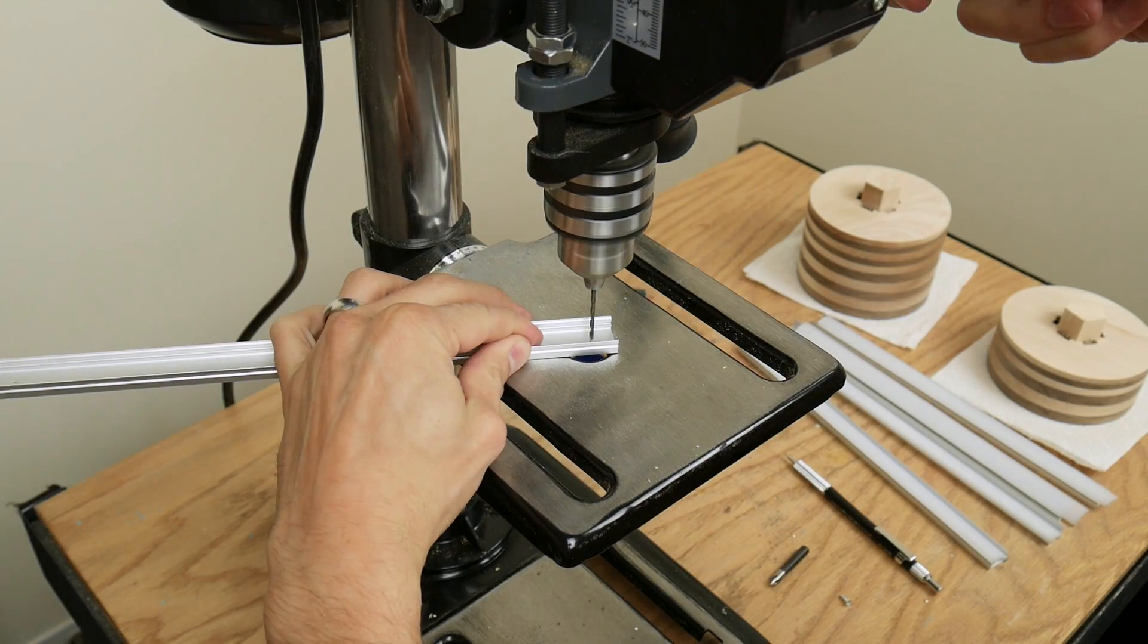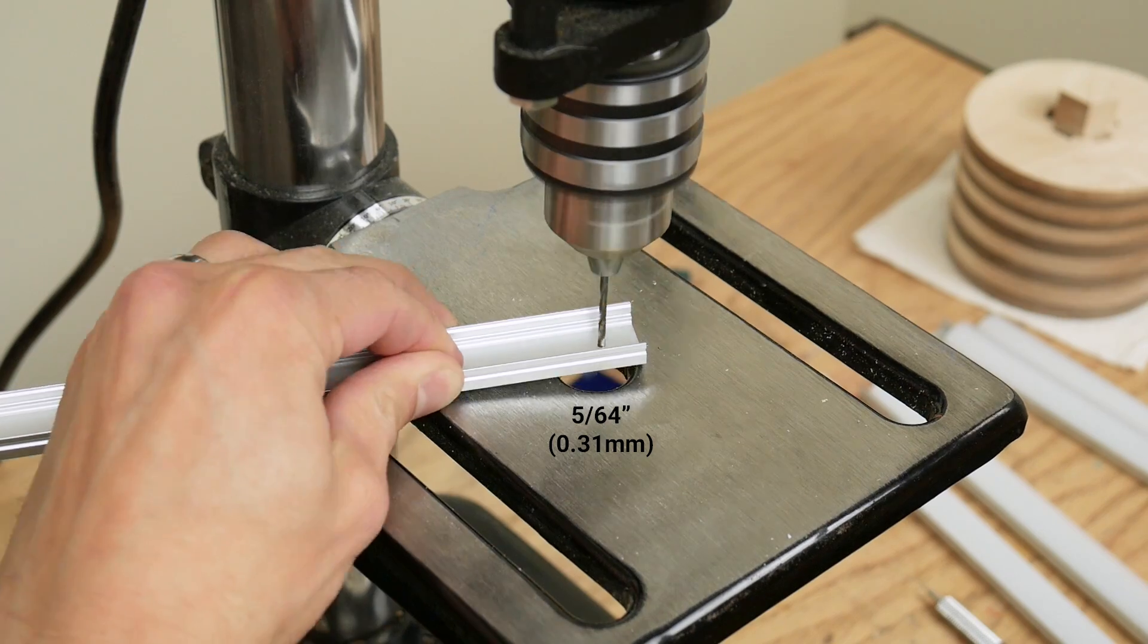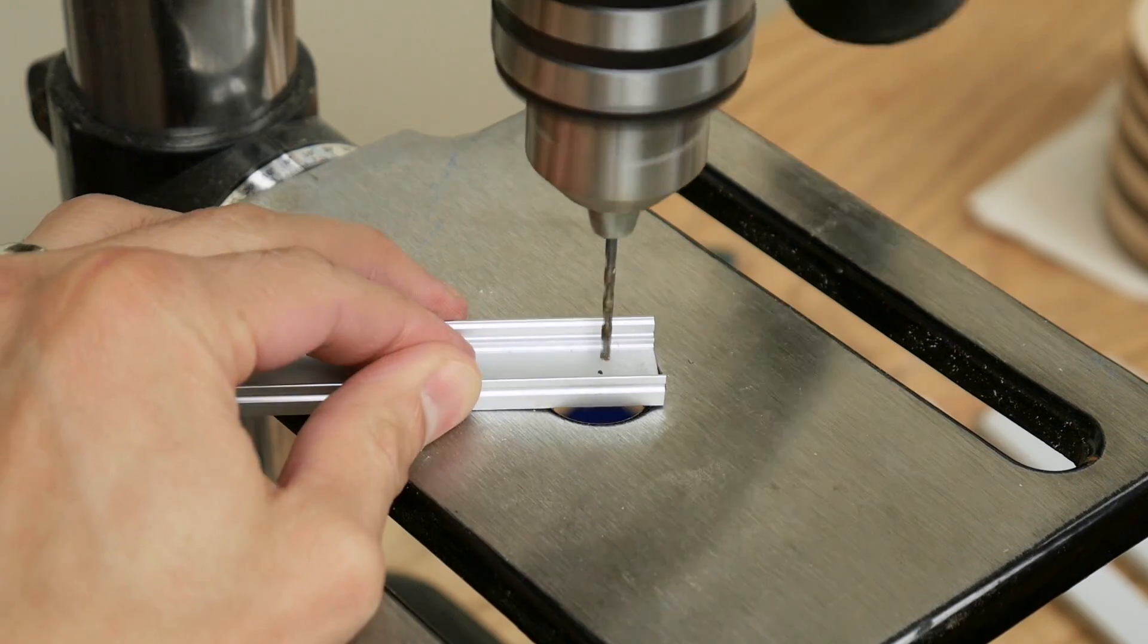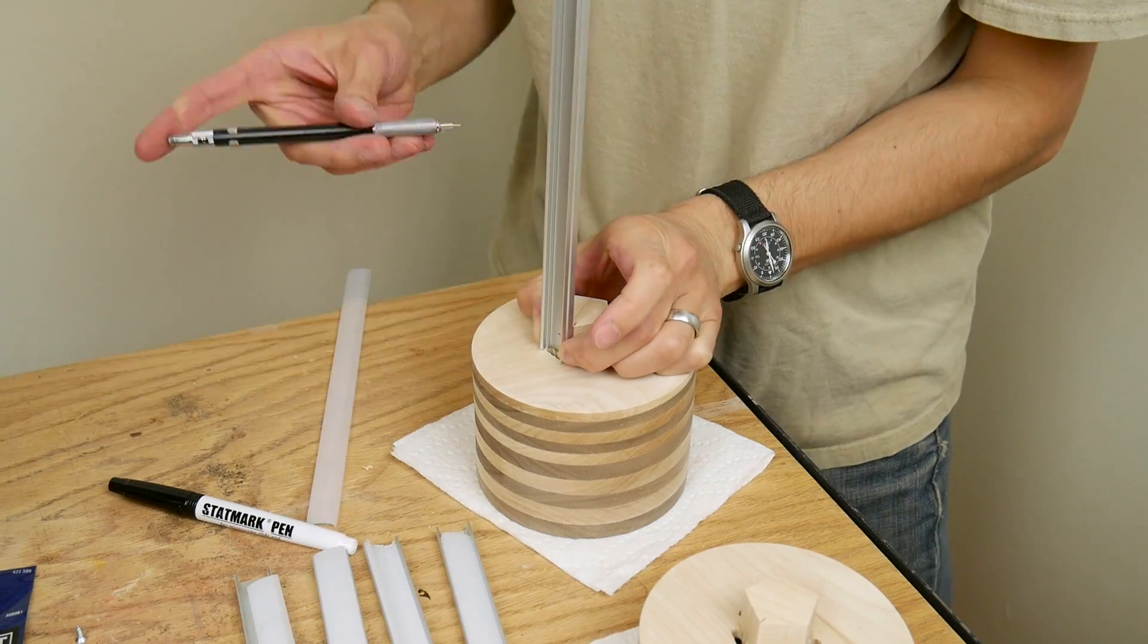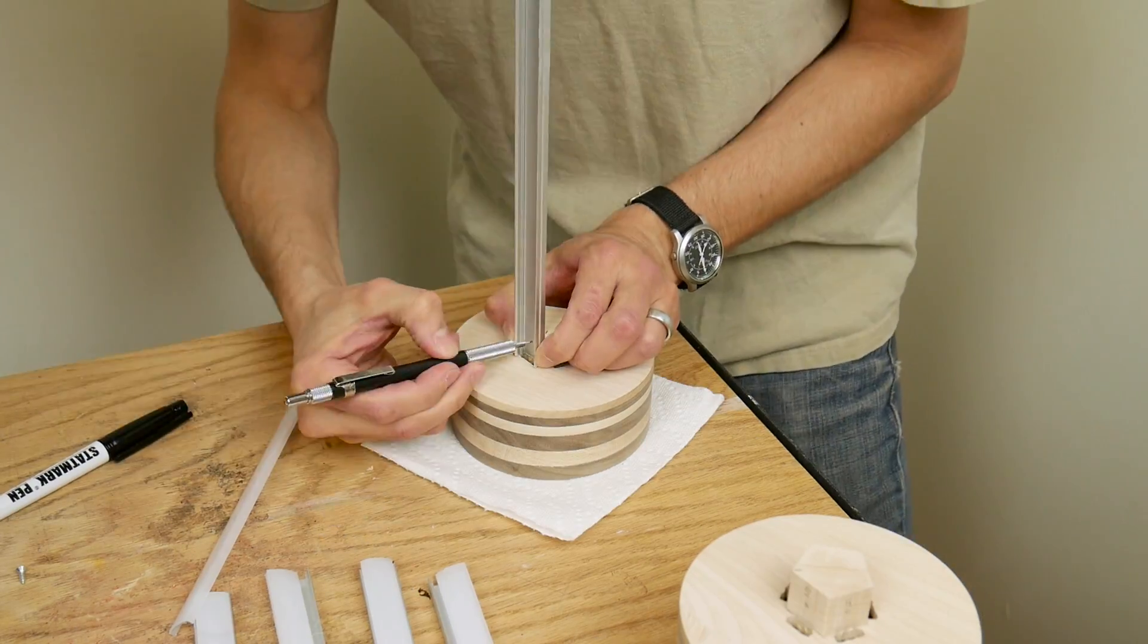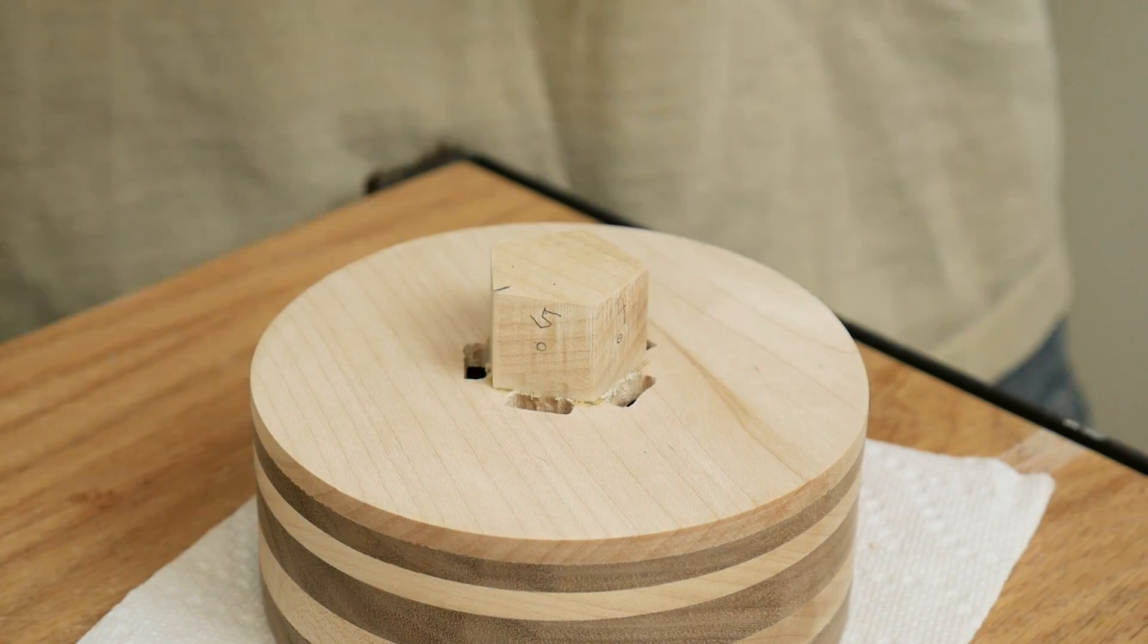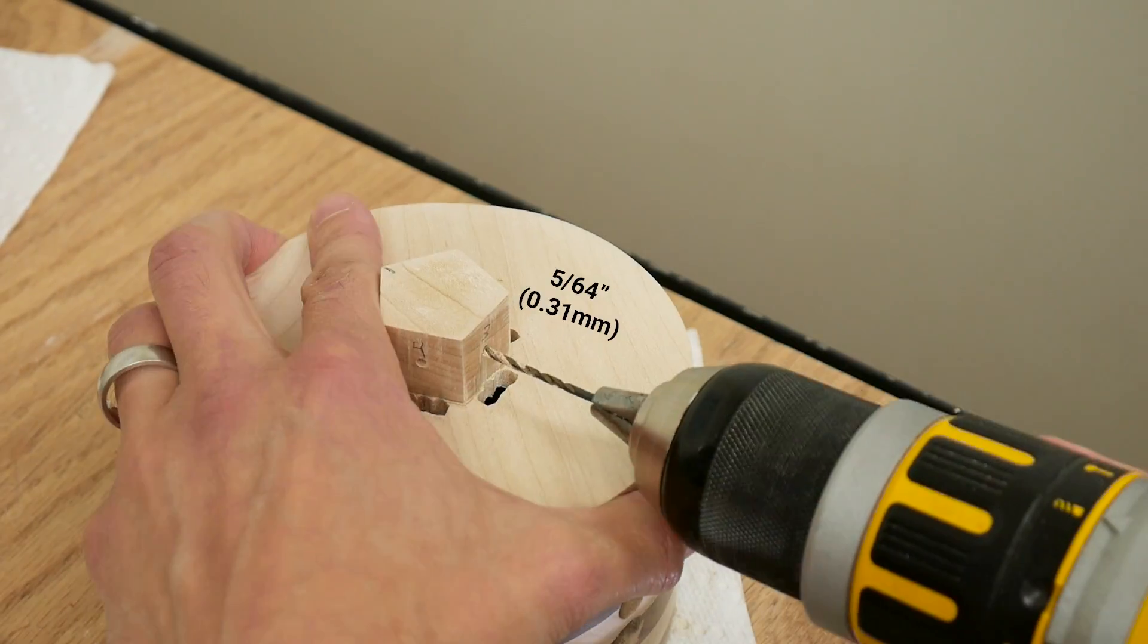I drilled a 5/64 inch hole in both ends of each channel. These holes were a half inch from the end of the channel. Then I used these holes to mark drill locations in each pentagon. And used the cordless drill to drill 5/64 inch pilot holes at these spots.